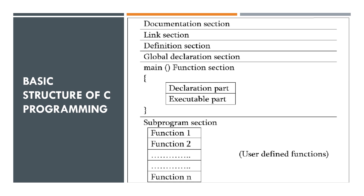The basic structure of a C program contains a documentation section, link section, definition section, global declaration section, main function section, and sub-program section.